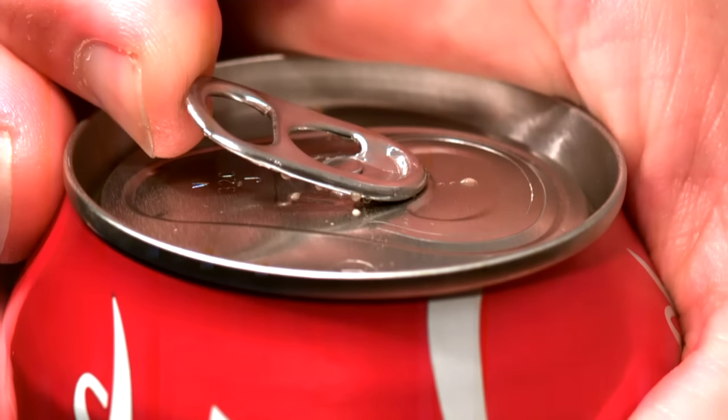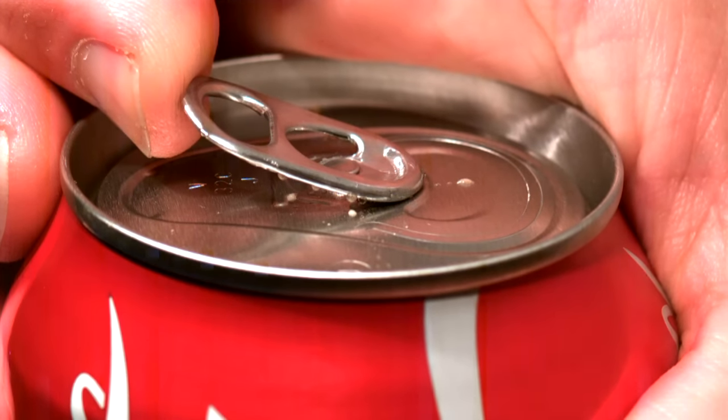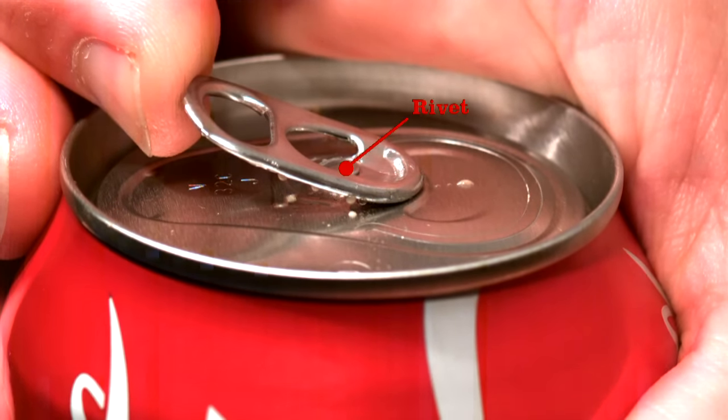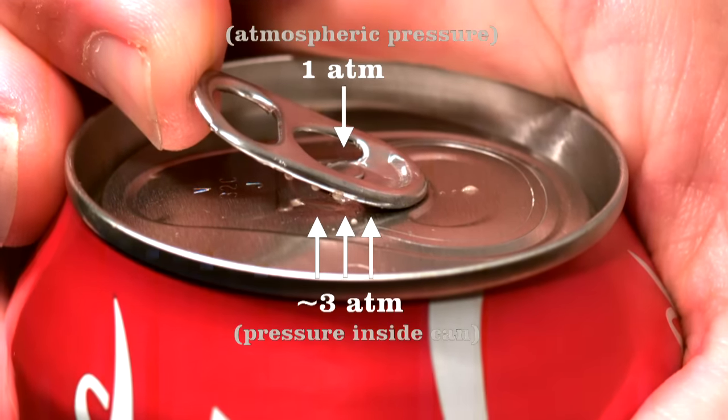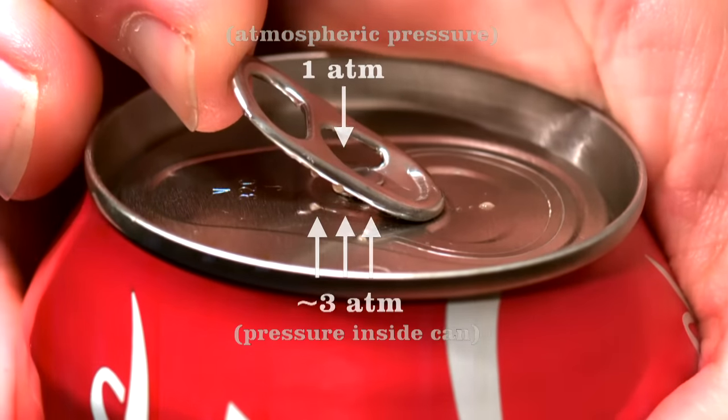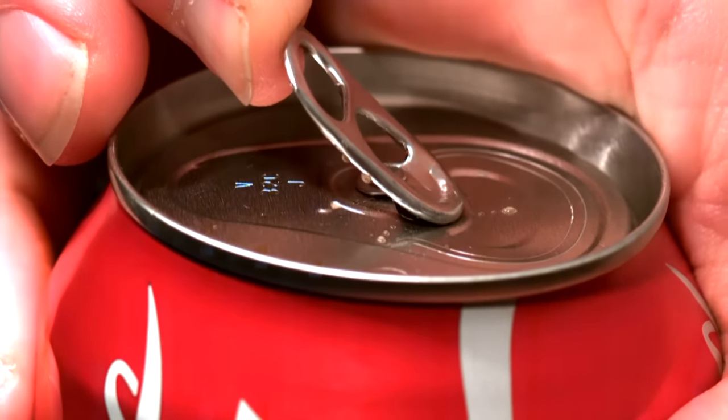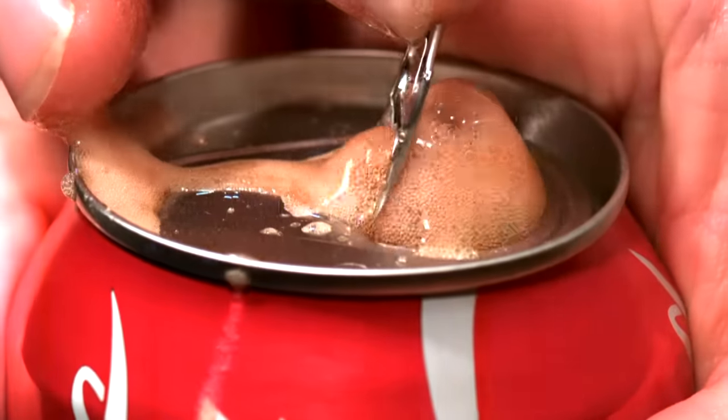From the side, you can see clearly how the tab, when working as a second-class lever, lifts the rivet. In fact, part of the reason this clever design works is because the pressure inside the can helps to force the rivet up, which in turn depresses the outer edge of the top until it vents the can, at which point the tab changes to a first-class lever.